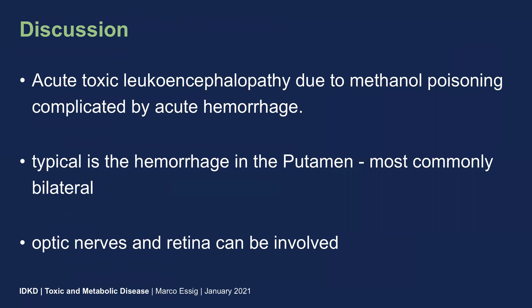In this case we have an acute toxic encephalopathy due to methanol poisoning, which is complicated by acute hemorrhage. For methanol poisoning, hemorrhage is typical and it is typical in the putamen and most commonly bilateral. In our case we see only a unilateral area of hemorrhage.